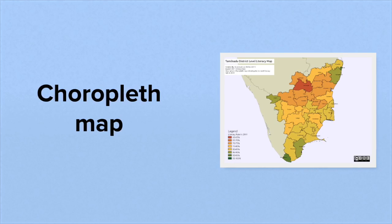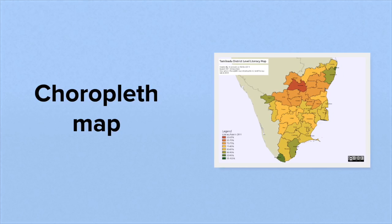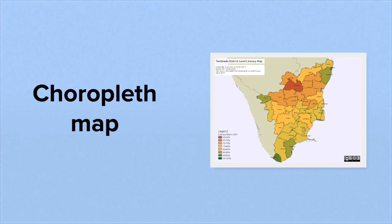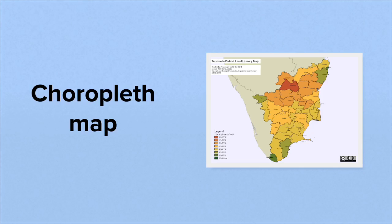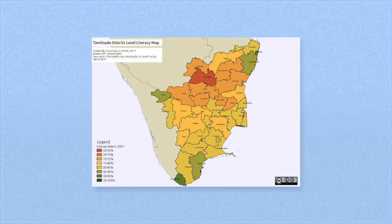We can see it here with a district level literacy map for Tamil Nadu. We go from green areas having the most literacy to dark red having the least. This shading helps us to see patterns as clearly as possible.